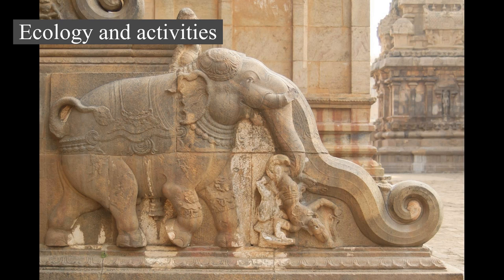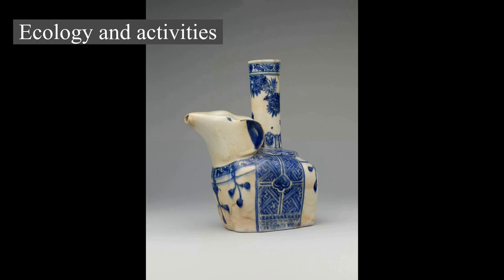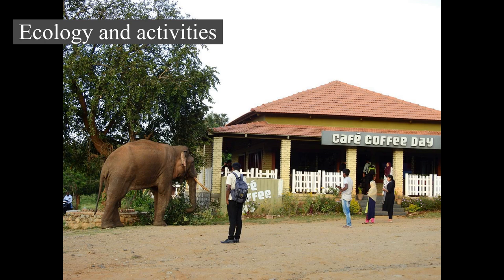Elephants are herbivorous and will eat leaves, twigs, fruit, bark, grass, and roots. They are born with sterile intestines and require bacteria obtained from their mother's feces to digest vegetation. African elephants are mostly browsers, while Asian elephants are mainly grazers. They can consume as much as 150 kg (330 lb) of food and 40 L (11 U.S. gal) of water in a day. Elephants tend to stay near water sources. Major feeding bouts take place in the morning, afternoon, and night. At midday, elephants rest under trees and may doze off while standing. Sleeping occurs at night while the animal is lying down. Elephants average 3–4 hours of sleep per day.